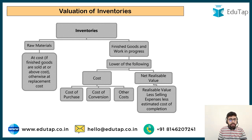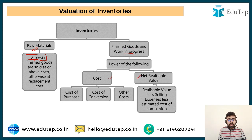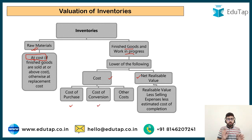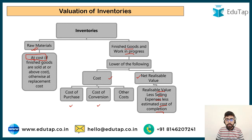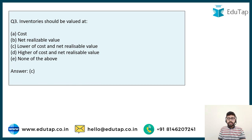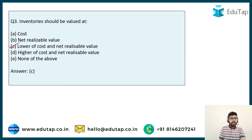Raw material is valued at cost only. Finished goods and work in process follow the lower of cost or NRV principle. Cost includes: cost of purchase, conversion cost to convert raw material into finished product, and other costs to be included. NRV is computed by taking the selling price, reducing selling expenses, and reducing estimated cost of completion for WIP. Inventories are valued at lower of cost and NRV — the answer is option C.